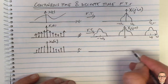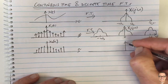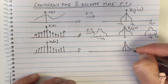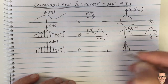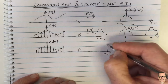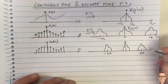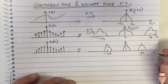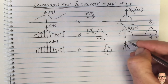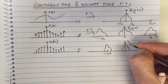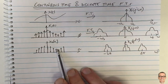This discrete time signal also has a Fourier transform. The question is: how do these two things relate? One thing we know for the discrete time Fourier transform is that the basis functions repeat at 2π. We often use e^(jω) as the basis function for the Fourier transform of the discrete time signal.